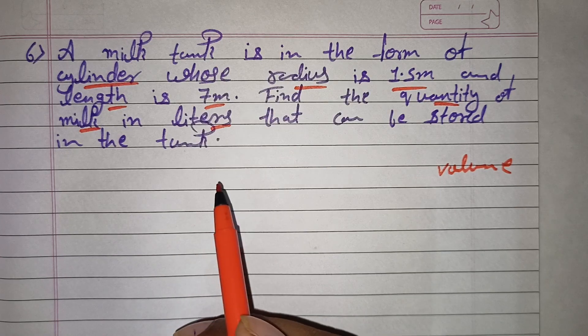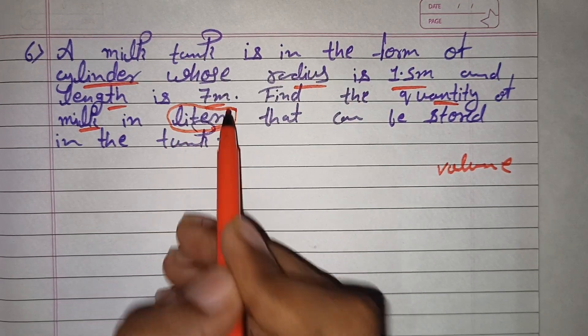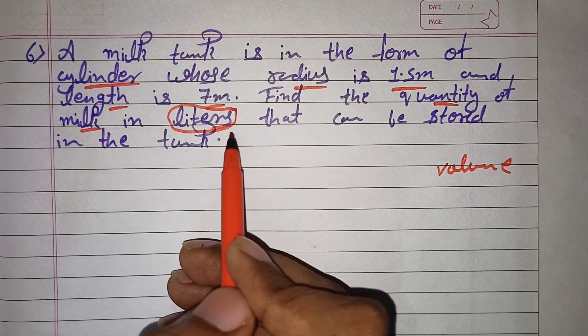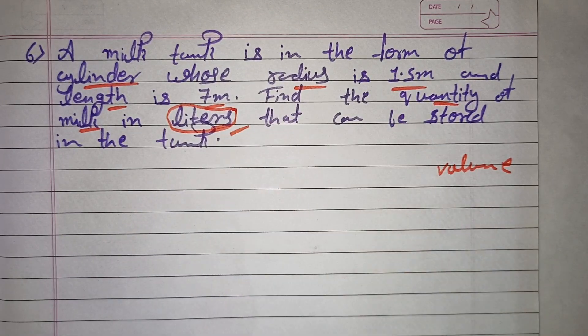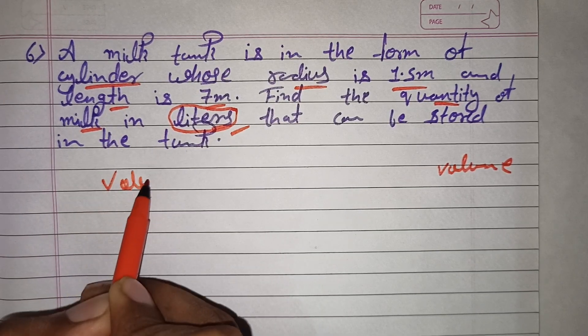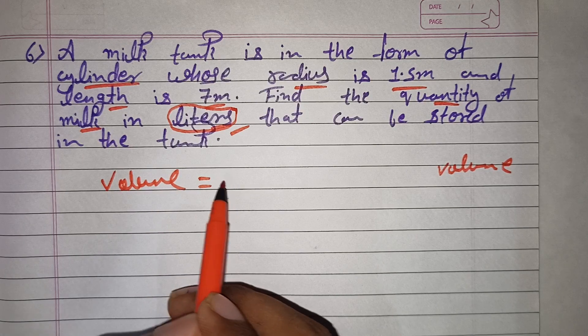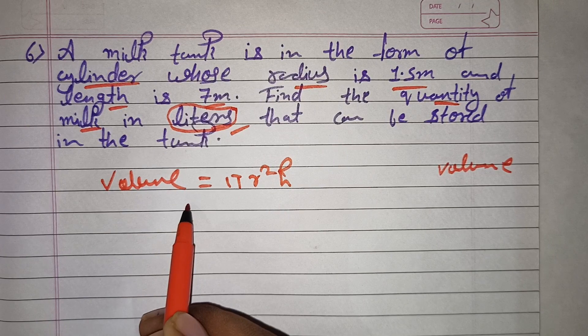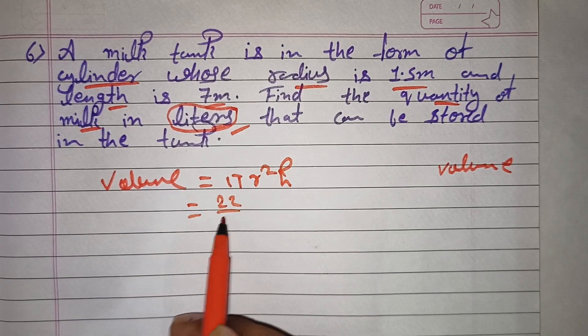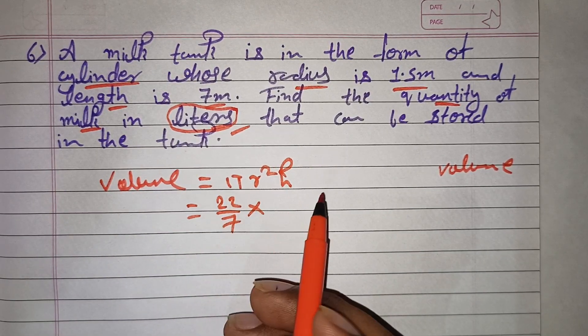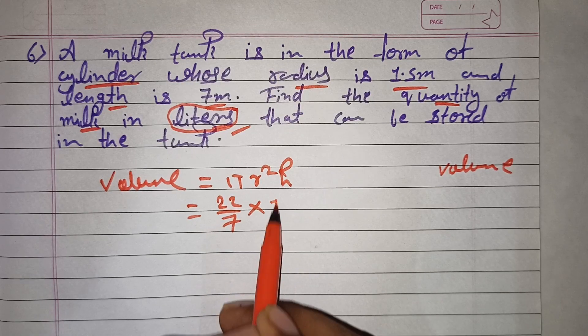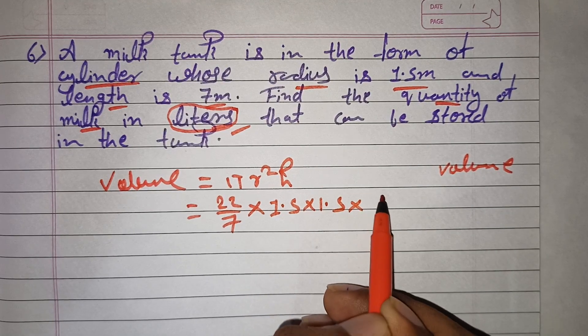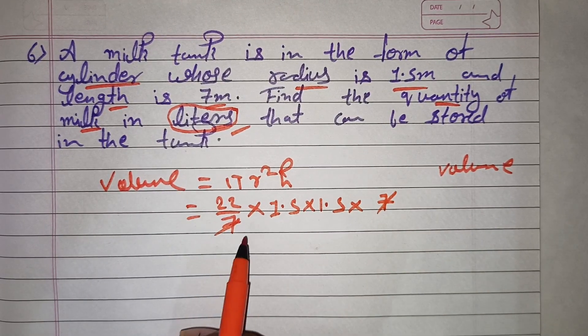For the volume of cylinder, what is the formula? Pi r squared h. So 22 by 7 and r which you have to put, the radius 1.5 into 1.5 squared. 7 and 7 cancel out.